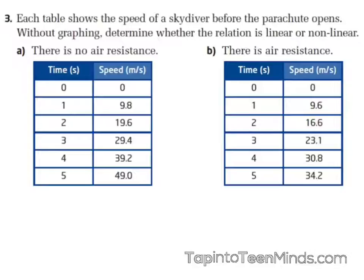What is the difference between these two tables? What does it mean if there is no air resistance and there is air resistance? — Before the parachute is opened and after. — Okay, so you're saying before and after the parachute opens. However, the question says it's the speed before the parachute opens only. So you're on the right track — they're different speeds — but not quite before and after the parachute opens. I like the thinking.